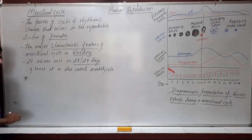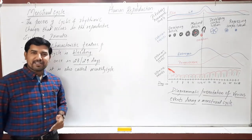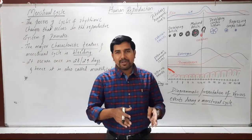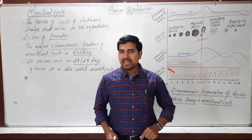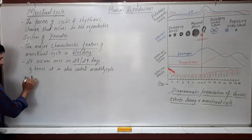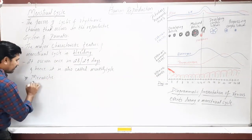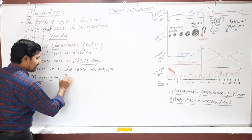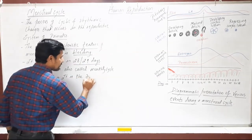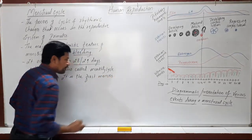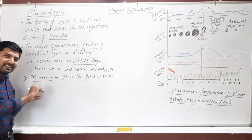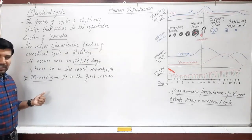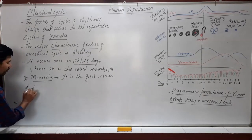The menstrual cycle occurs at the pubertal phase — the sexual maturity phase — which occurs at the age group of around 10 to 13 years. The first menstrual cycle is called menarche. Menarche is the first menses or the first menstrual cycle, marking the starting of the menstrual cycle at the pubertal phase. Another term is menopause.